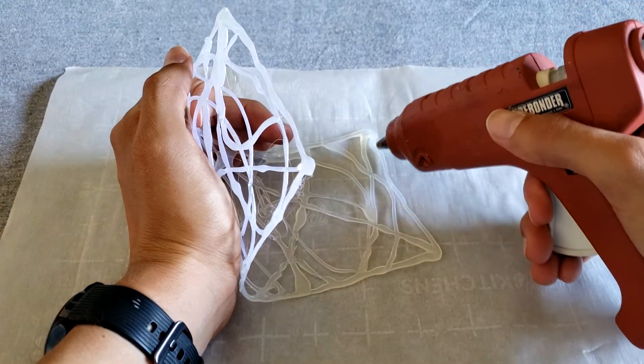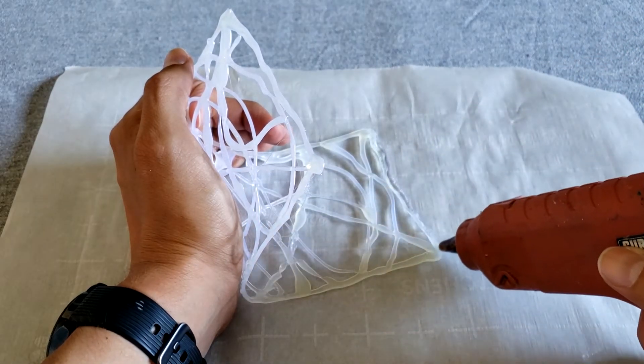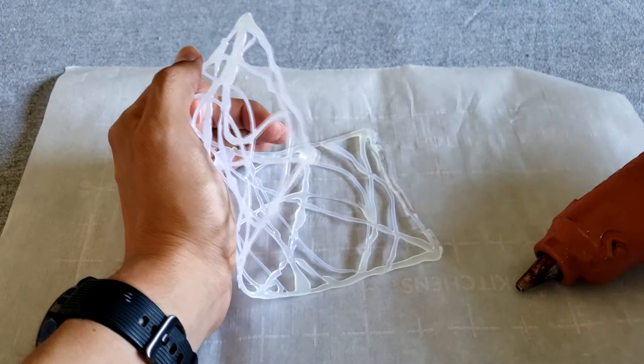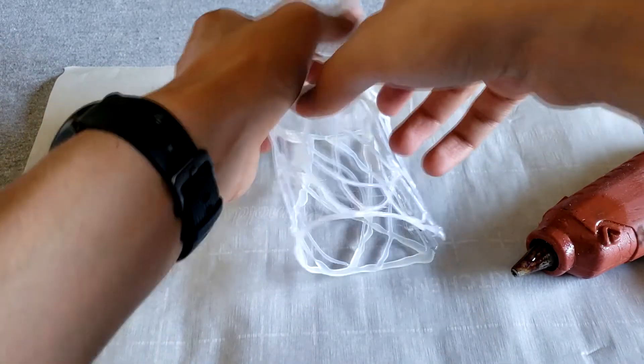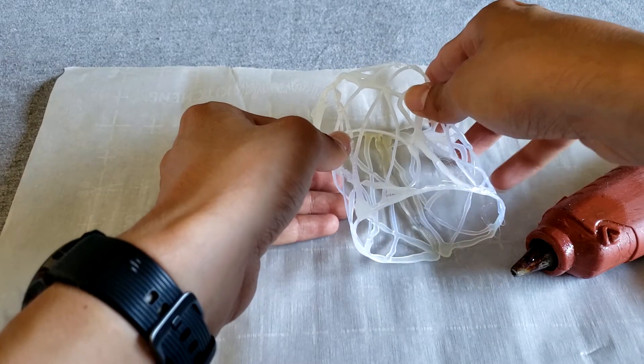So now we're going to connect our candle holder together by hot gluing one of the small corners of our candle holder to the other one. And you can do this by just gently folding it over and holding it together while the glue dries.